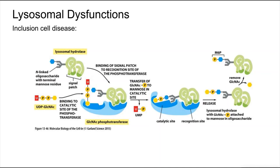This missorting has been traced to a defective or missing GlcNAc phosphotransferase, an enzyme which is essential for the addition of phosphate residues to the terminal mannose residue on lysosomal enzymes. Because lysosomal enzymes are not phosphorylated in the cis-Golgi network, they are not segregated by the mannose-6-phosphate receptors into the appropriate transport vesicles in the trans-Golgi network. Instead, they are carried to the cell surface and secreted by a default pathway.